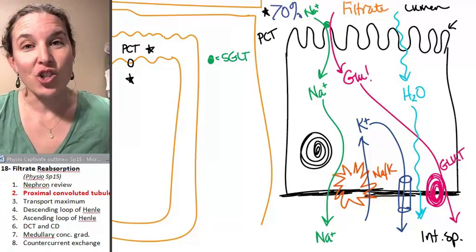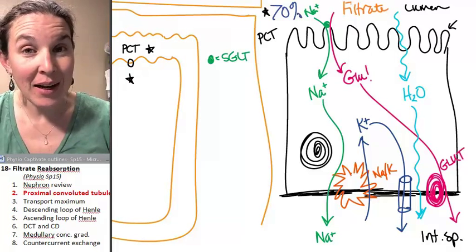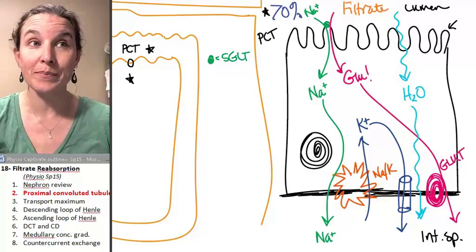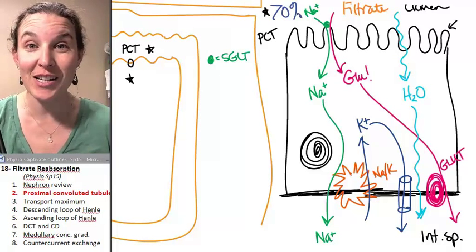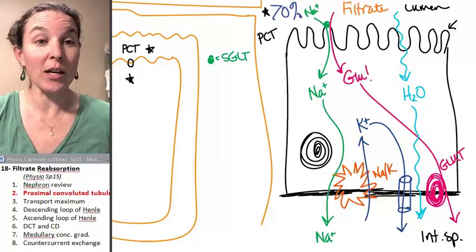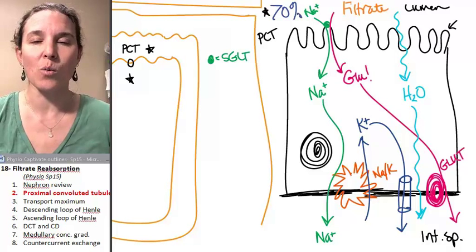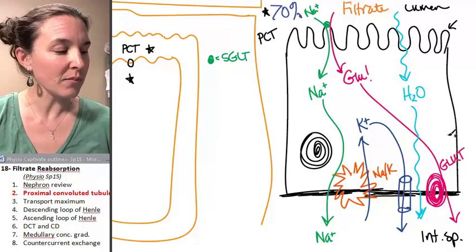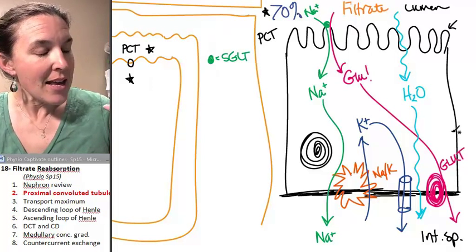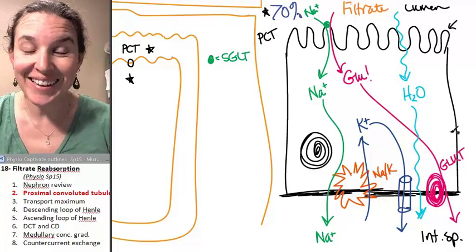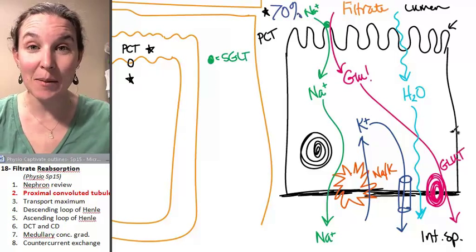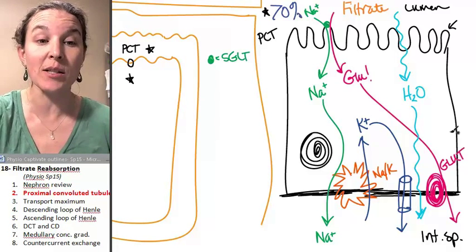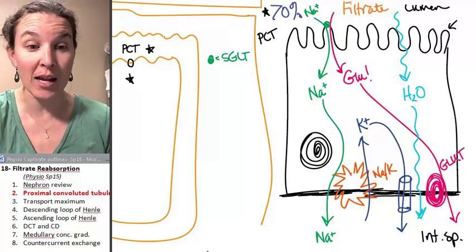This is just one example of a mechanism to absorb solutes. We could look up a whole bunch of different solutes that we can reabsorb, and I'm sure we know all sorts of mechanisms for reabsorption. Sometimes you hit a limit to what you can reabsorb, and that's called the transport maximum, and that's what we're going to talk about next.